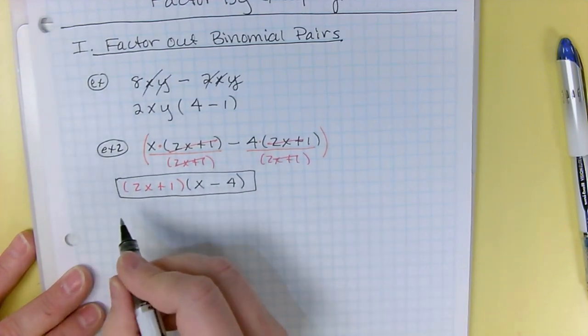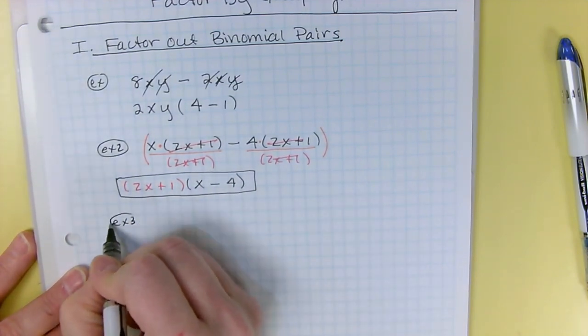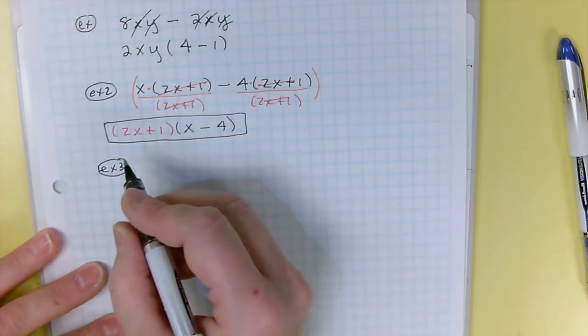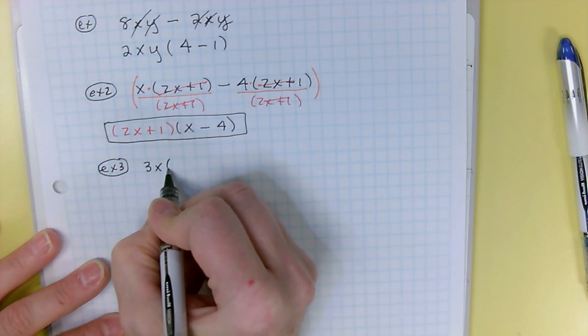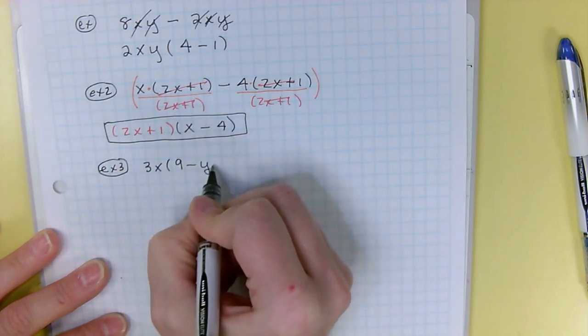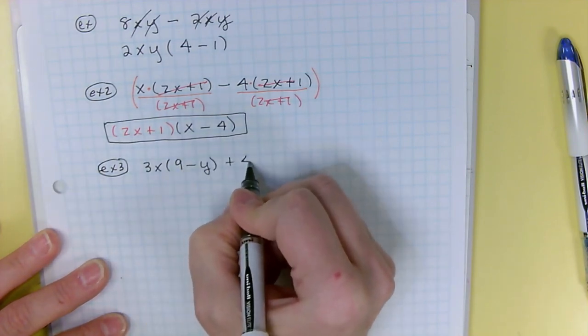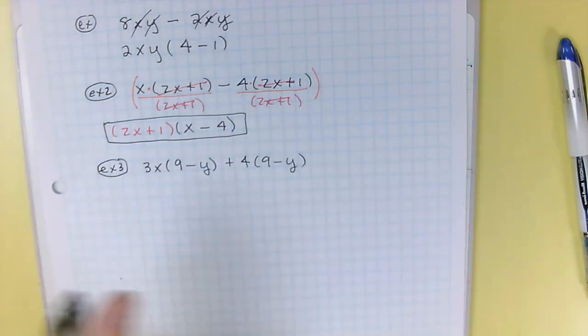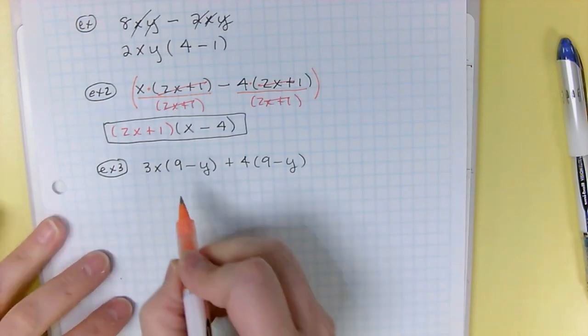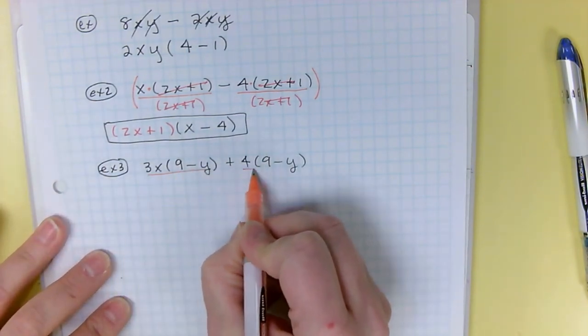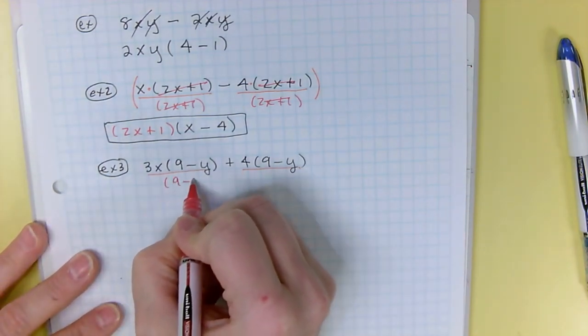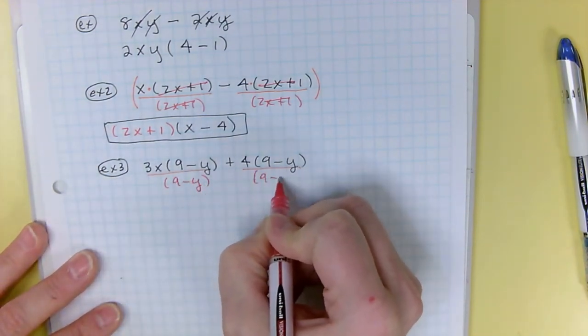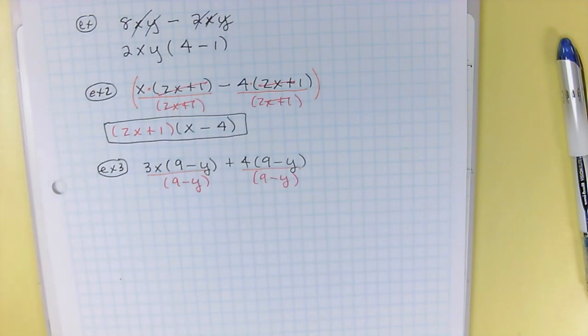Okay, let's do one more of these, and then we'll do the whole process. So example three, you've got 3x times (9 minus y) plus 4 times (9 minus y). And again, you ultimately have one term plus another term, and the factor that they have in common is a 9 minus y binomial, so you're going to divide that out.